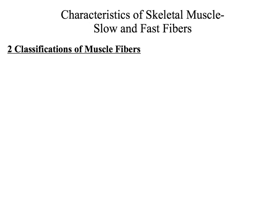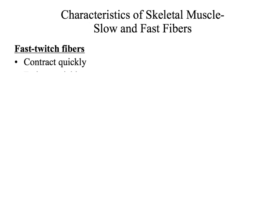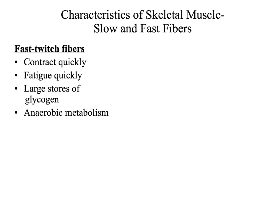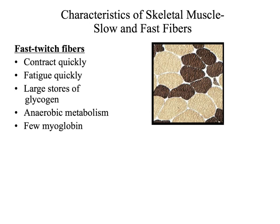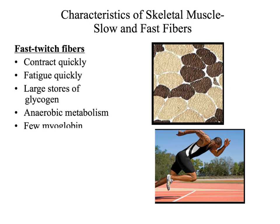Let's look at the two classifications of muscle fibers that help generate force. The first type is called a fast-twitch fiber, and the second is called a slow-twitch fiber. Fast-twitch fibers contract quickly, which means they're used for explosive movements, and because of this, they fatigue quickly. Fast-twitch fibers are also large storages for glycogen, which can be converted into glucose used during cellular respiration for ATP production. Fast-twitch fibers undergo anaerobic metabolism, meaning they can break down glucose and form ATP in the absence of oxygen. Fast-twitch fibers have few myoglobin — a protein that binds to oxygen, similar to hemoglobin in the blood. In the illustration, fast-twitch fibers are the light-colored fibers, and they are used for explosive movements such as sprinting.